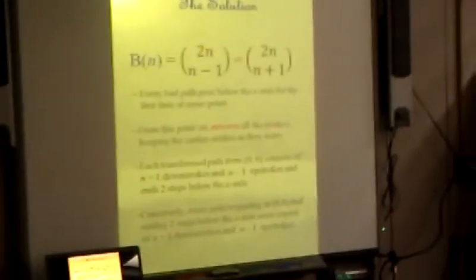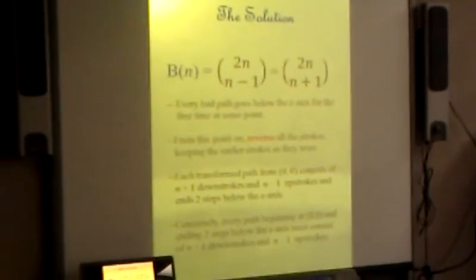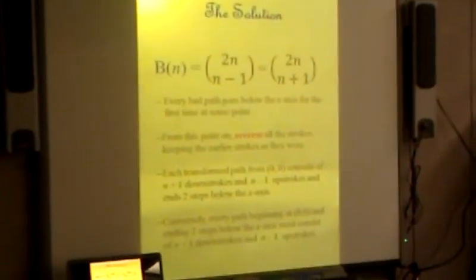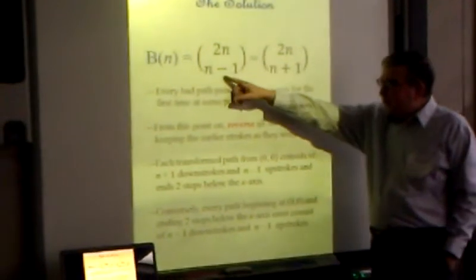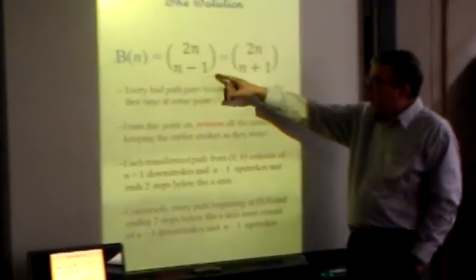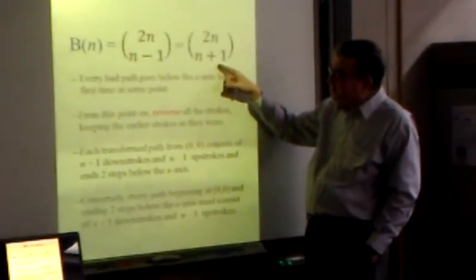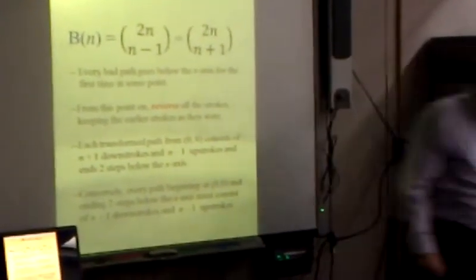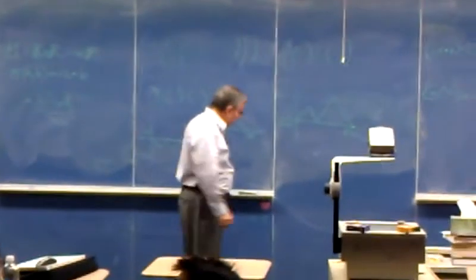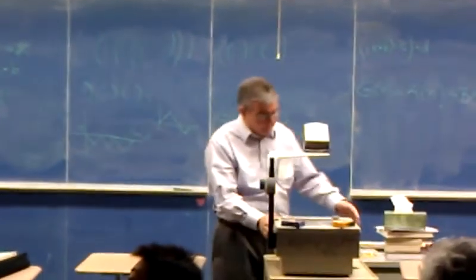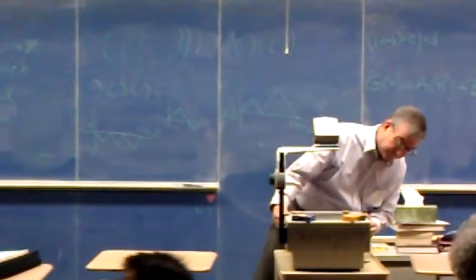Now, here's the thing. I claim that the number of bad paths is given by this binomial coefficient, which turns out to be the same as this. Let me show you what I am talking about there. I think maybe I'm going to use this.